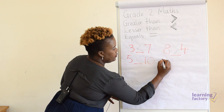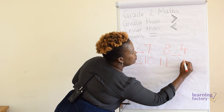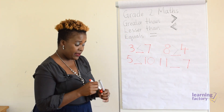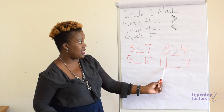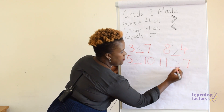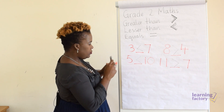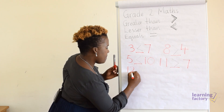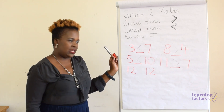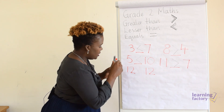Let's have eleven and seven. I hope by now you've figured it out and you're working it out way faster than I am. Eleven is greater than seven — put your sign. And let's have twelve and twelve.